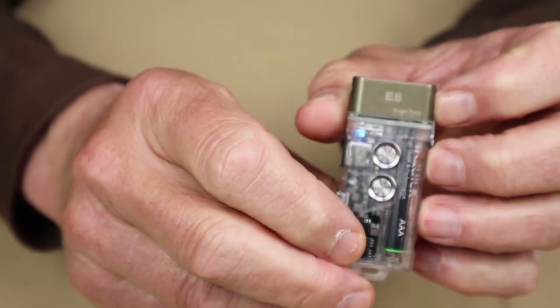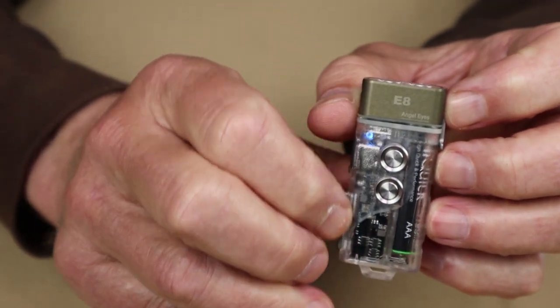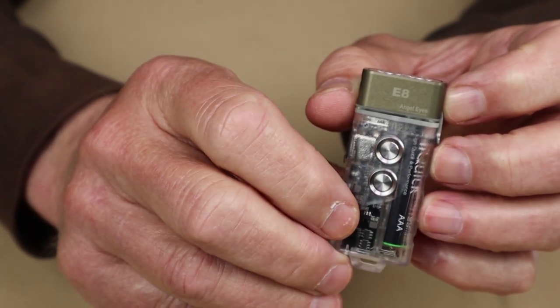And if I triple press again, it switches over to blue. And that indicates to me that the light is running off of the lithium polymer battery.